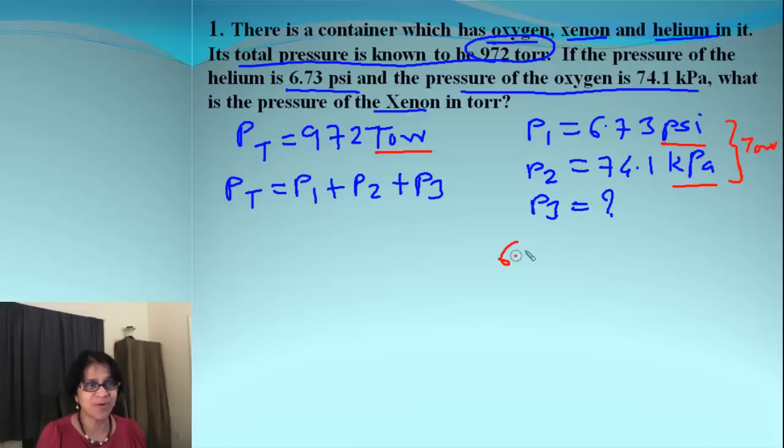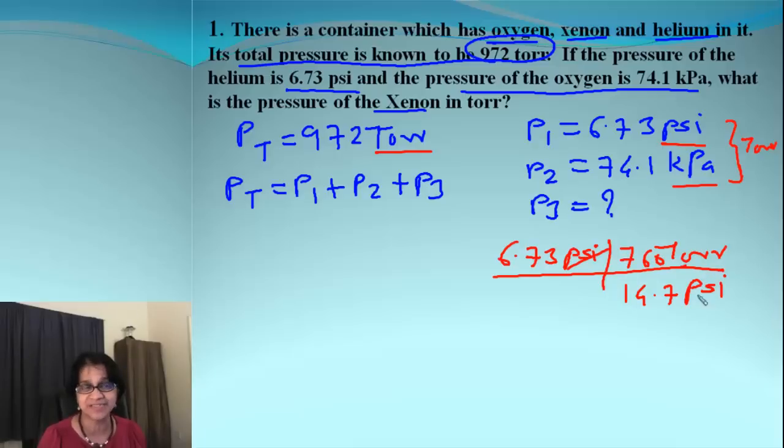So, let's do the conversion. 6.73 psi going through torr. And, that means we should have psi over here. And, if it is psi, you should know we get 14.7 psi and this will be 760 torr. They are all equal values of pressure. Remember, when atmosphere is equal to all those values. So, psi gets cancelled and what we end up getting is 348 torr. Now, remember, what we got was actually P1 value in torr.